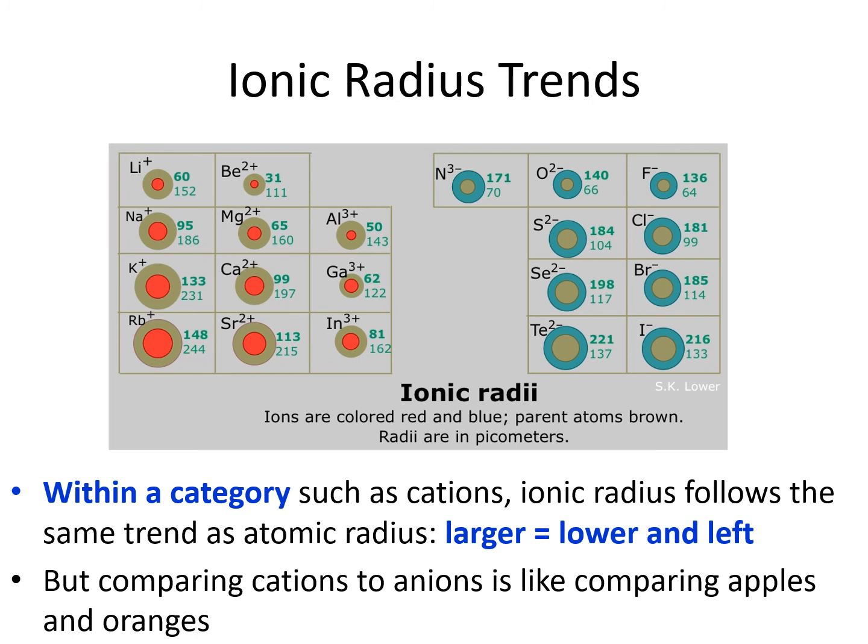We just can't compare ionic radii for the whole periodic table because cations and anions behave differently — it is like comparing apples and oranges. So we could predict the beryllium ion would be smaller than the rubidium ion, since they are both metals. But we could not predict which would be larger, the lithium ion or the fluoride ion, because one is a metal and one is a non-metal.